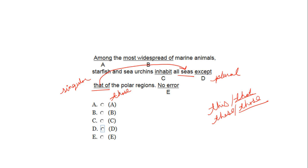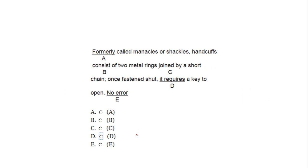Among the most widespread of marine animals, starfish and sea urchins inhabit all seas except those of the polar regions. The right answer is D.